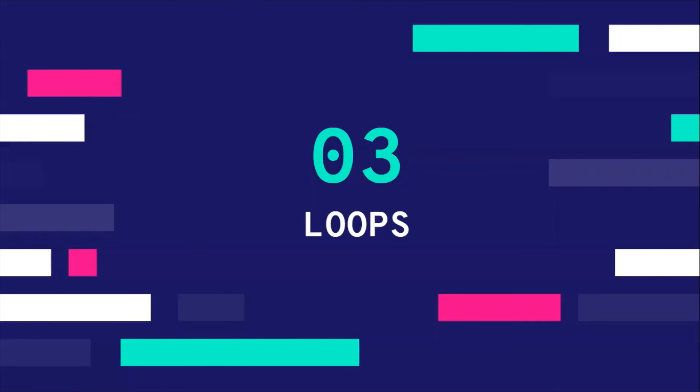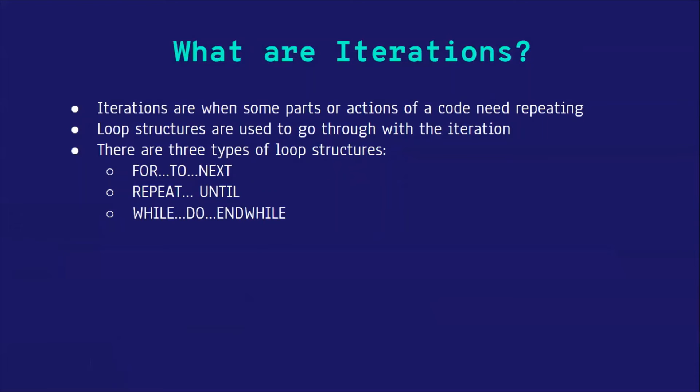So next, loops. What are iterations? Iterations are when some parts or actions of a code need repeating. Loop structures are used to make this repetition. There are three types of loop structures: FOR loop, REPEAT UNTIL loop, and WHILE to ENDWHILE loop.